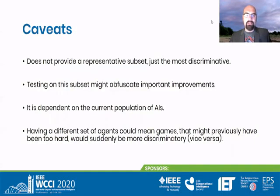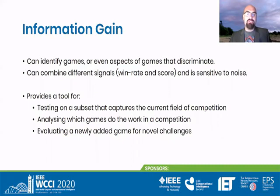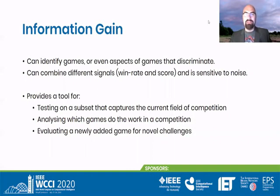The information gain analysis has some caveats. It is heavily dependent on the actual population of AIs, and it might also obfuscate certain improvements as it's not a representative subset — it's just the most discriminative. But overall, it captures different signals, it's sensitive to noise, and it picks those games that are best at discriminating between the different AIs. It gives you a nice analysis tool if you're designing a competition or want a quick subset to test improvements within the space of the population, and it allows you to evaluate new games you want to add to your challenge. Thank you for your time and hopefully one of us will be there for your questions.